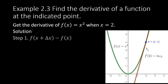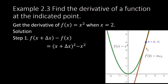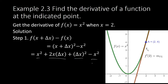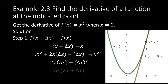Step 1: evaluate f of x plus delta x minus f of x. So f of x plus delta x equals (x plus delta x) squared. Expanding the square of a binomial: x squared plus 2x times delta x plus delta x squared, minus x squared. Simplifying, x squared minus x squared is zero, and factoring out delta x we are left with delta x times the quantity 2x plus delta x.